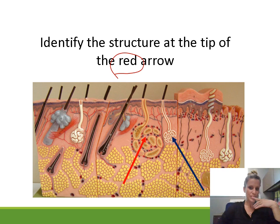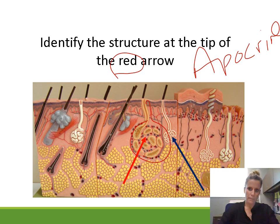Identify the structure at the tip of the red arrow. This is pointing to the larger sweat gland — the larger sweat glands are apocrine glands.